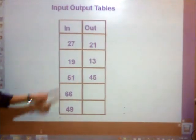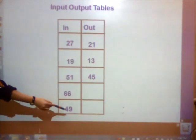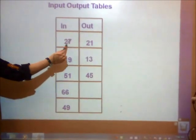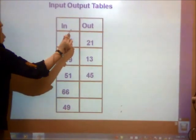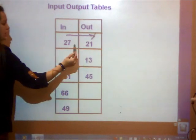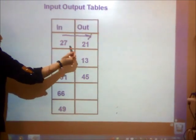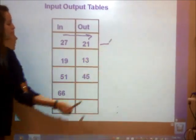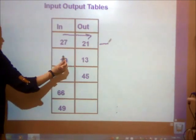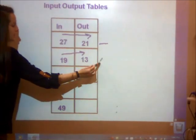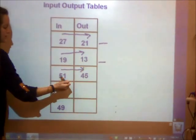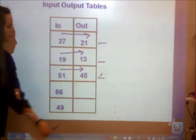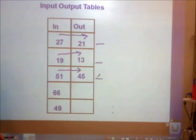Here's another table that goes from top to bottom. I'm inputting 27 and I'm getting 21. I can see that my numbers are getting smaller. 21 is less than 27, so I must be subtracting. 13 is less than 19, so I'm subtracting again. 45 is less than 51. I'm subtracting.